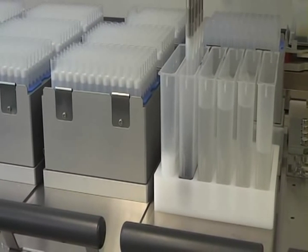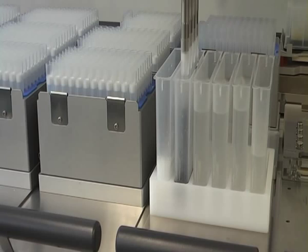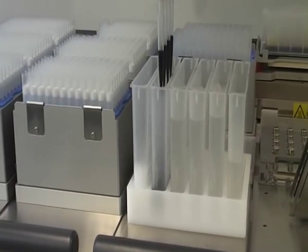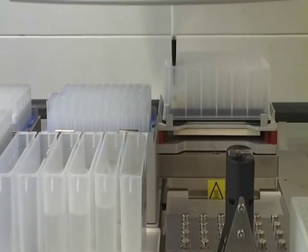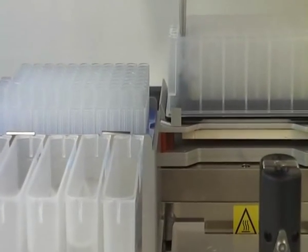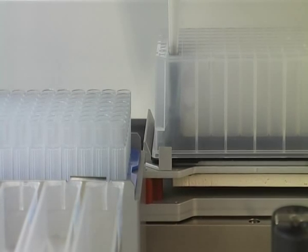In the next step, binding buffer is added to the wells. The black color of this buffer is caused by the magnetic beads, which give the Foodproof Magnetic Preparation Kit 1 its name. They are also responsible for the high quality of the DNA purified. As shown here, the solution containing sample and buffer is mixed by pipetting up and down.